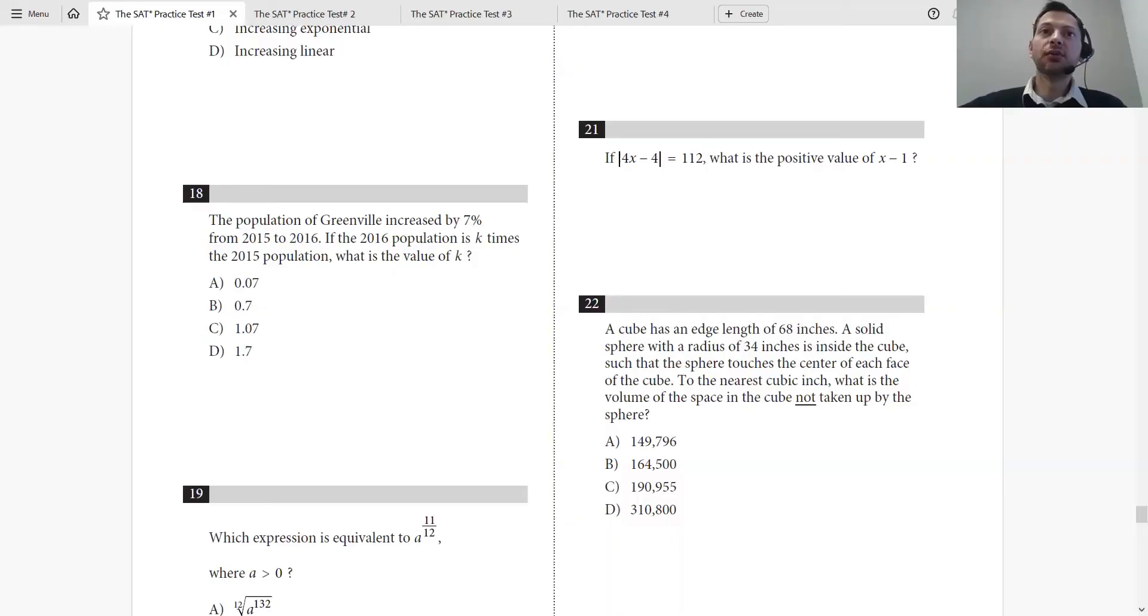Now let's actually look at real problems from the SAT and work through them. Let's start with question number 18. The population of Greenville increased by 7% from 2015 to 2016. If the 2016 population is K times the 2015 population, what is the value of K?